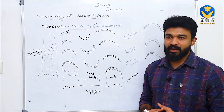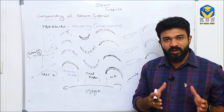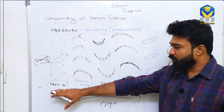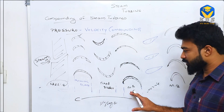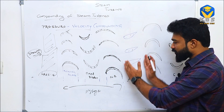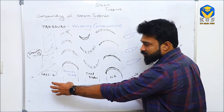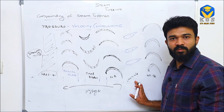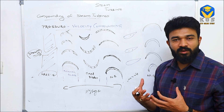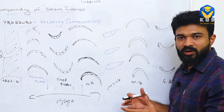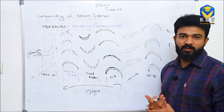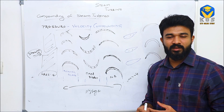One more compounding method is pressure-velocity compounding, which is a combination of velocity compounding and pressure compounding. In this method, velocity compounding takes place first — moving blade, fixed blade, moving blade. Then nozzles are placed before the next stage to expand the remaining pressure and boost velocity again. Then velocity compounding continues with another set of moving blade, fixed blade, moving blade. This type of compounding is called pressure-velocity compounding.